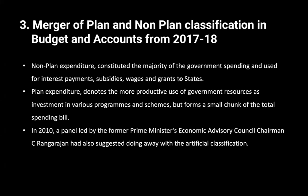Continuing from the next part - in the previous part we discussed the first two budget reforms: one was the advancement of the budget cycle, and there was one more reform which we took up. Today we basically have to talk about a total of five reforms, so in today's part we will cover all the reforms. The third budgetary reform was that we merged the railway budget and the general budget, so we started presenting one union general budget from 2017.